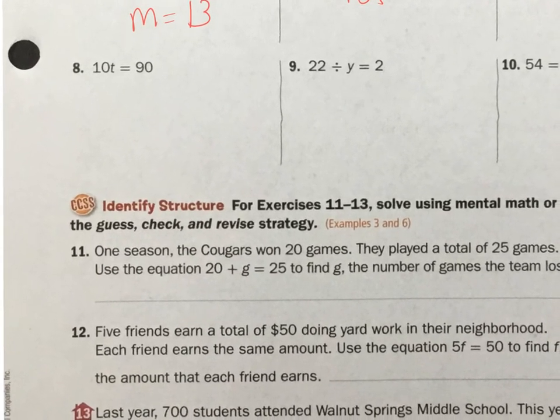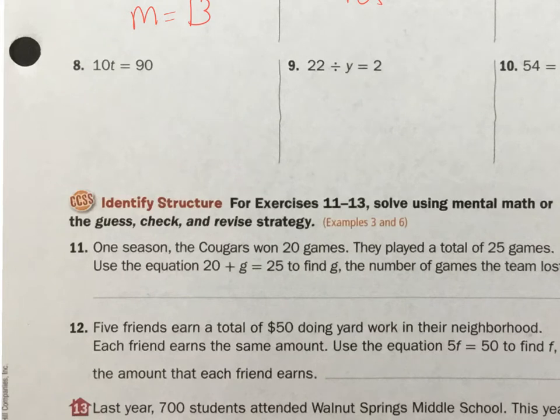Number 8. 10 times t equals 90. What's t? Well, 10 times 9 equals 90. You almost ask yourself, what is that variable? What is that? If this is this, then what is it? What can I change this to so that it can be a complete statement, or a correct statement, I should say?